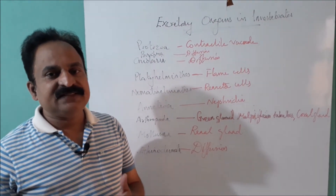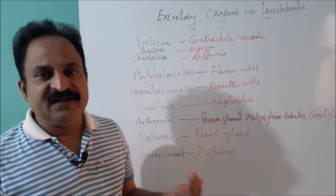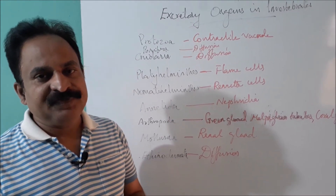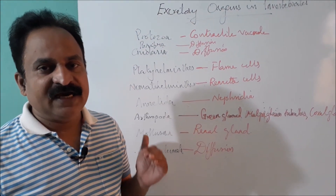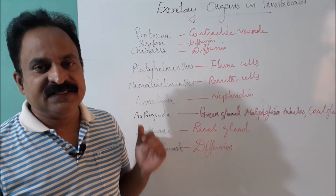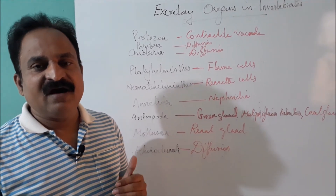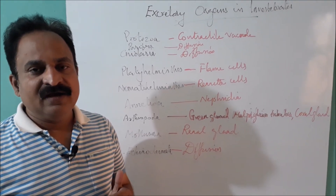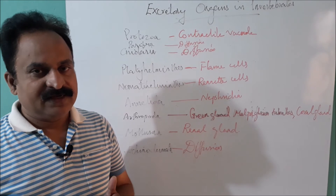There are various phyla involved in invertebrates: from Protozoa, Porifera, Cnidaria, Platyhelminthes, Nematelminthes, Annelida, Arthropoda, Mollusca, Echinodermata, and others.